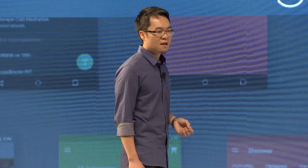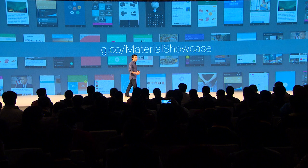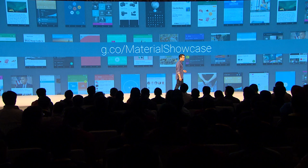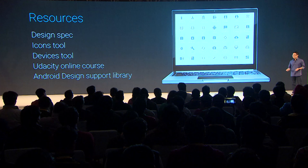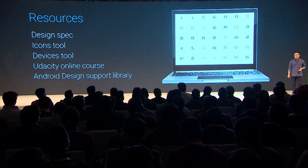Those are just some of the examples, and we have many more since introducing Material Design over the past year and a half. There are over hundreds of thousands of apps that have updated their design, and you can see some of these great examples at g.co/materialshowcase. We've also been working hard to help you implement Material Design with resources available on design.google.com, including the latest design specs, an icon assets library, and a devices tool that provides the latest device specs and metrics for screen densities and sizes of the most popular devices. For those of you who are into interactive learning, we also have a Udacity course on Material Design.